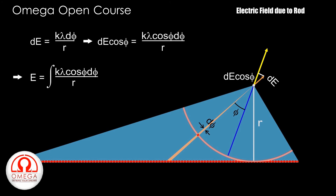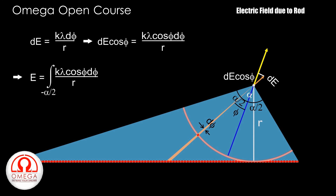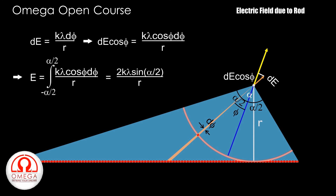If the arc subtends an angle alpha at the point, then the limits of integration are from minus alpha/2 to alpha/2. Integrating, we get 2·K·lambda·sin(alpha/2) divided by R.